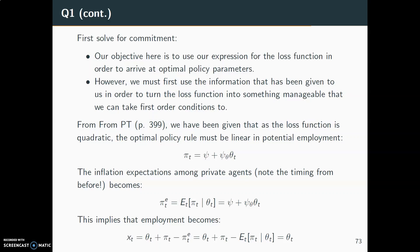First we solve for commitment. Our objective is to use the loss function to arrive at optimal policy parameters, but we first use available information to turn the loss function into something manageable for first-order conditions. We know from Persson and Tabellini, page 399 — I suggest reading chapter 15 — that when we have a quadratic loss function, the optimal policy rule must be linear in potential employment. So we have the policy rule π_t = ψ + ψ_θ·θ_t. And we know that the inflation expectations among private agents becomes the expectation of this rule, using all information about θ_t.